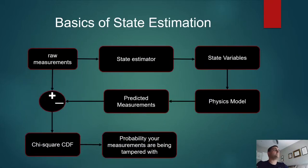The basic idea behind state estimation is you take raw measurements from your sensors. You have a state estimator that you run it through that gives you state variables, which the state variables feed into your physics model, which is similar to the state estimator, to give you measurements that you would have predicted. You then subtract those from the raw measurements that you got and plug the output into a chi-squared distribution function, which will give you a probability that your measurements are either garbage or being tampered with.